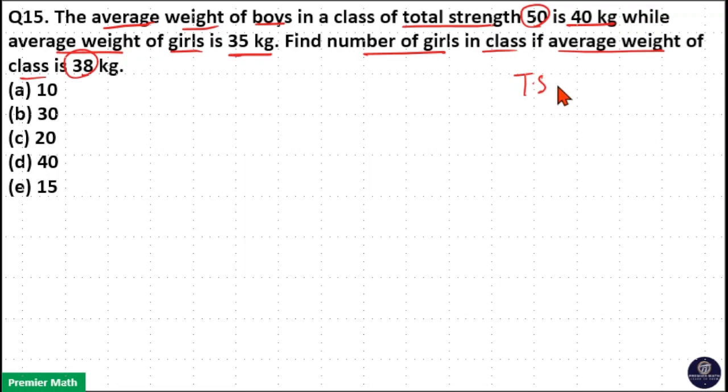Here, total number of students in a class is number of boys plus number of girls. And here, boys average is given and girls average is given. Also, class average, that is total number of student average, is also given, which means we can use allegation method here.